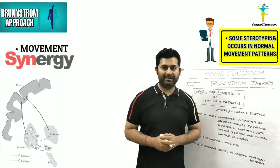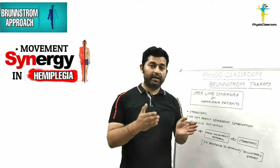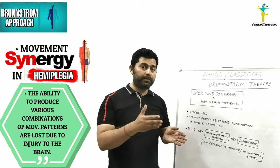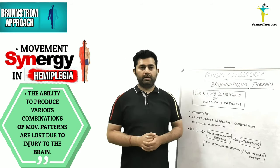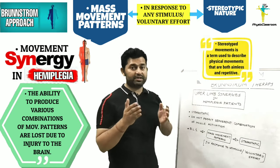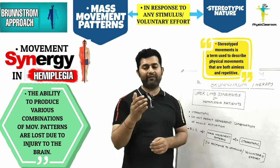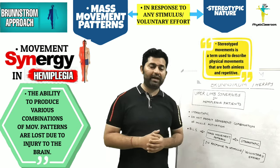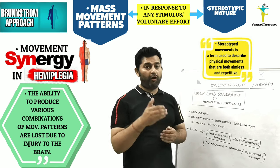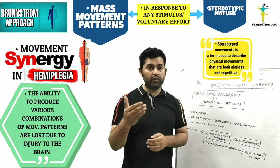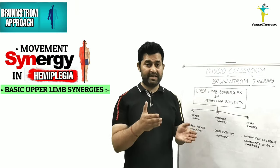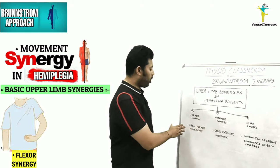In contrast to normal synergy movement patterns, hemiplegic patients demonstrate basic limb synergies that are characteristically stereotyped and do not permit different combinations of muscle activation. Basic limb synergies in stroke patients can be defined as mass movement patterns which are stereotypic in response to a stimulus or voluntary effort. This means that either reflexively or voluntarily, the patient will only be able to activate the same combination of muscle movements, so the ability to produce a variety of movements is characteristically lost.